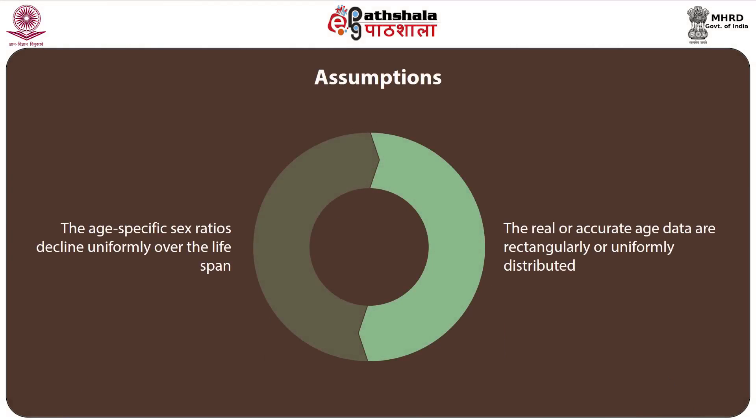Let us first examine the major assumptions behind this proposed method. The first major assumption is that the real or accurate age data are rectangularly or uniformly distributed. This assumption was also present in the other two methods — Whipple's and Mayer's index — because all these methods compare from an ideal uniformly distributed age distribution.